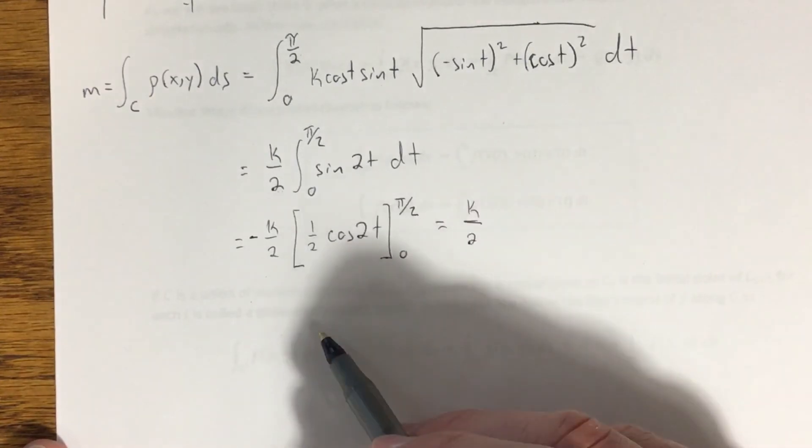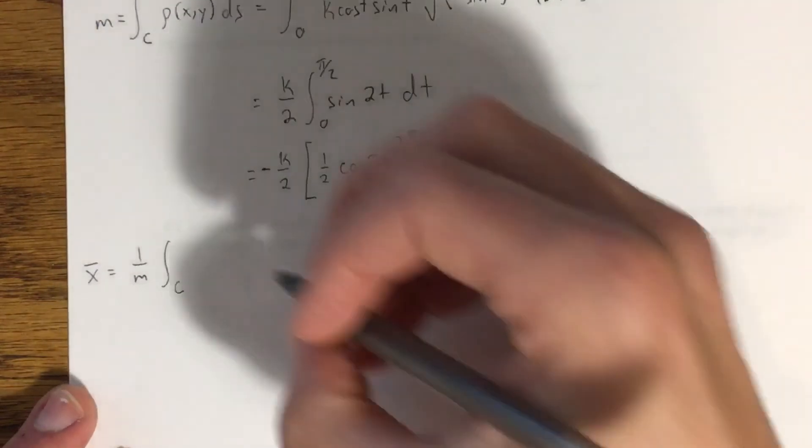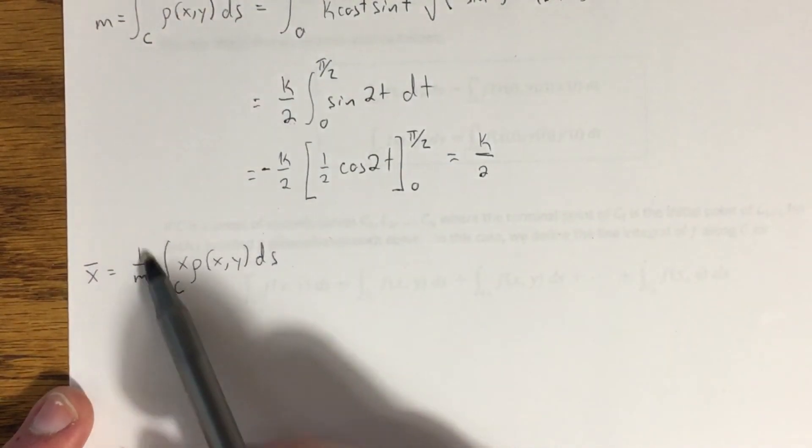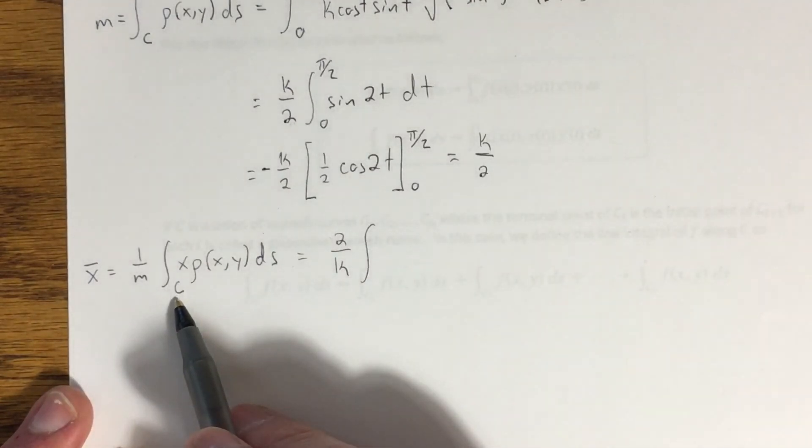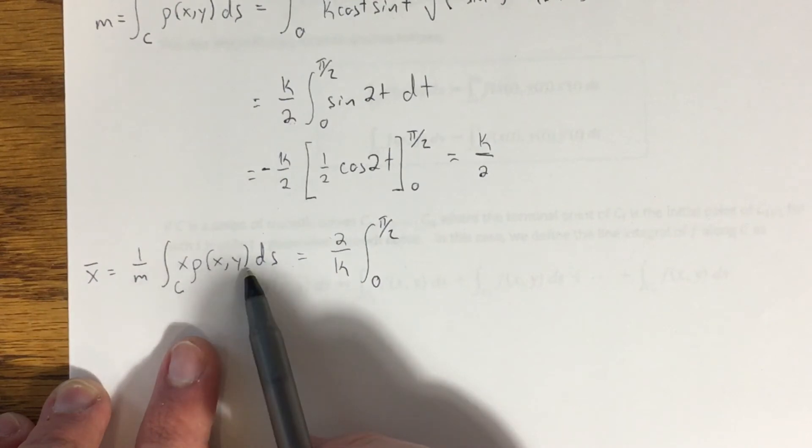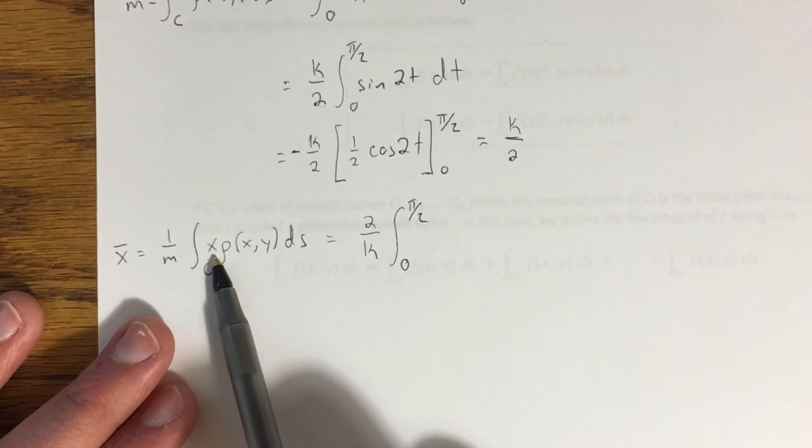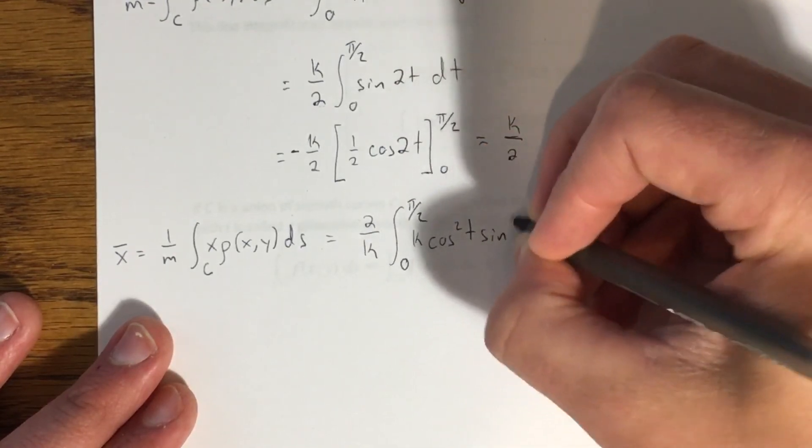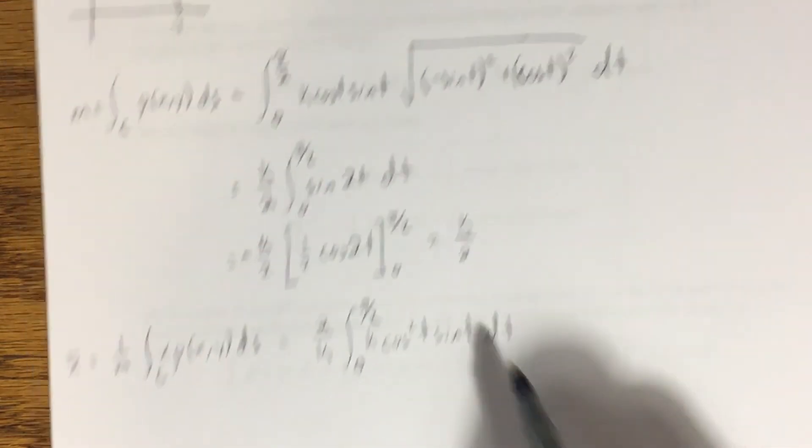Remember, x bar is equal to 1 over m times the integral of my density function times x along c. Okay? Well, 1 over m, that's the reciprocal of my mass, which would be 2 over k then. And again, the curve is parametrized for us, so we're still going to use the same limits of integration, 0 to pi over 2. Now, rho of xy becomes k cosine of t sine of t as we had up here. But I'm multiplying that by x, which is cosine of t. So that gives me an extra cosine of t here. All of this put together gives me k cosine squared of t sine of t dt. And again, I'm skipping the step where I'm writing this because we already know that this square root here is going to come out to a 1, so that simplifies things a little bit.